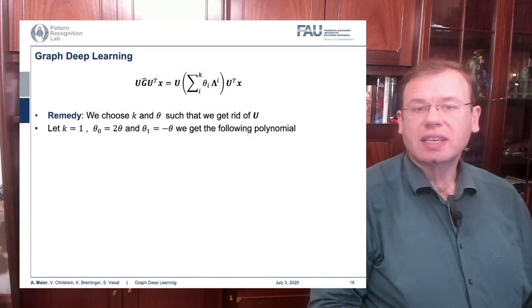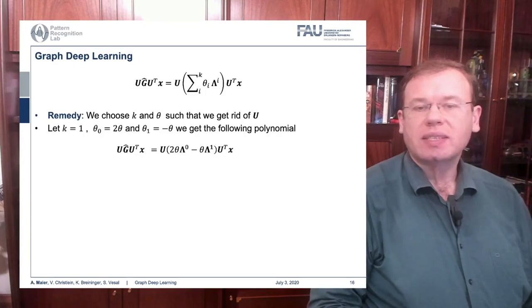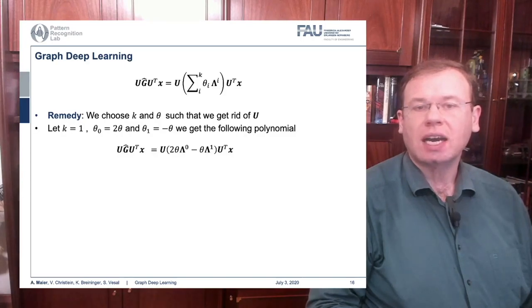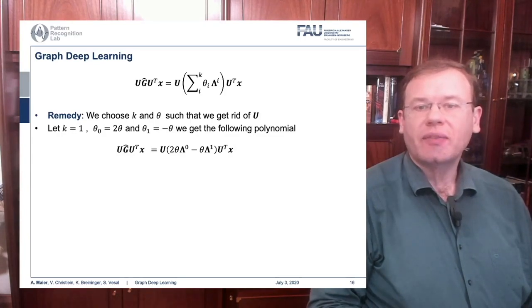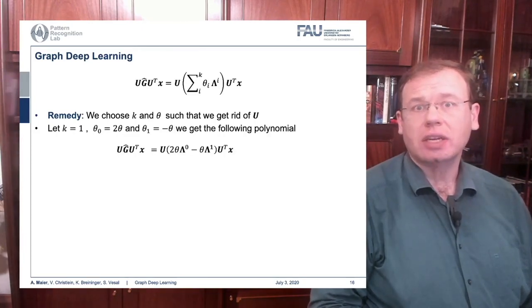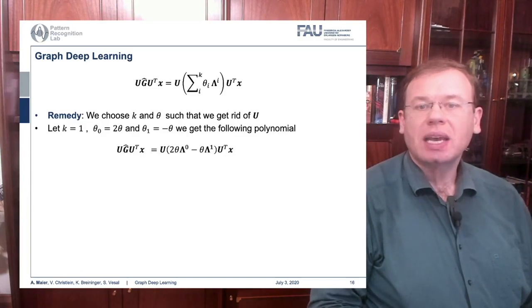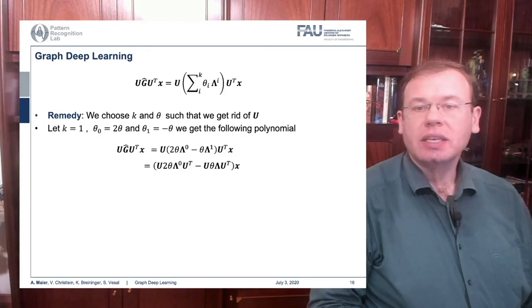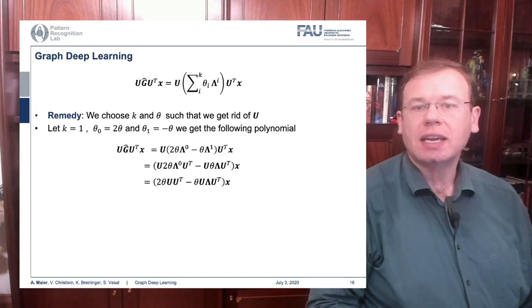But what if a clever choice of polynomials cancels out U entirely? If we choose k=1, theta_0 equals 2*theta, and theta_1 equals minus theta, we get the following polynomial. We still have x transformed into Fourier space, times our polynomial as a matrix, times the inverse Fourier transform. G-hat can be expressed as 2*theta times lambda to the power of 0 — which is a unity matrix — minus theta times lambda to the power of 1, which is just lambda.